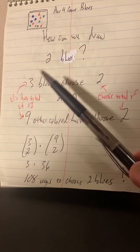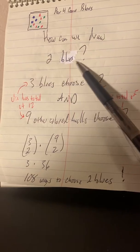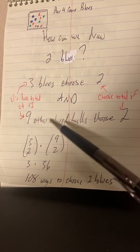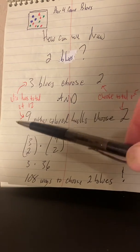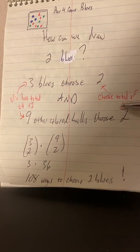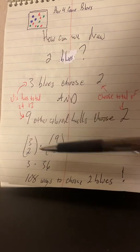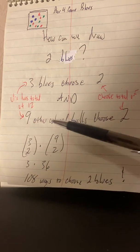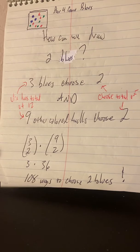We would have to get three blues. Out of the three blues, we'd have to choose two of them to get two blues. And out of the nine other colored balls, the green and red balls, we'd have to choose two because we're choosing a total of four. Nine and three is the total number 12 in the population. Two and two is the total in our sample four. So that means the number of ways we could get two blues is 3 choose 2 times 9 choose 2. Three times 36 is 108 ways to choose two blues.